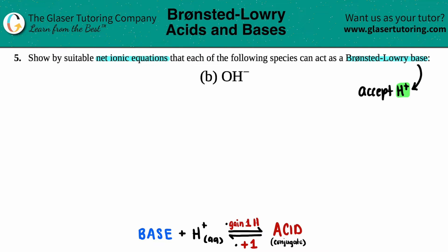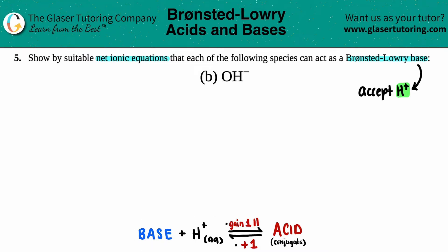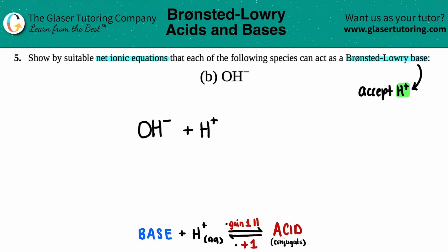So basically, what's going to happen is this OH- is going to accept a H+. This is how we write it in terms of a balanced equation: the base plus the H+ — they both have to be on the same side. So let's start with that: OH- plus H+. Since it's a net ionic equation, we have to include states. Anytime that you see a charge, it's going to be in aqueous solution, and since we're dealing with acids and bases, that's also aqueous. So: aqueous and aqueous.